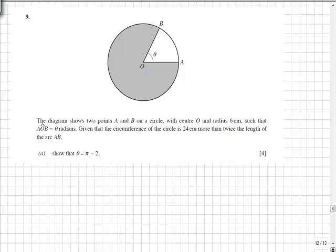In part A, we're asked to show that theta equals pi minus 2. The circle has centre O and radius 6 centimetres, and angle AOB is theta. Given the circumference of the circle is 24 centimetres more than twice the length of arc AB, we need to remember that arc length equals R theta. In this case, the radius is 6, so arc AB equals 6 theta.